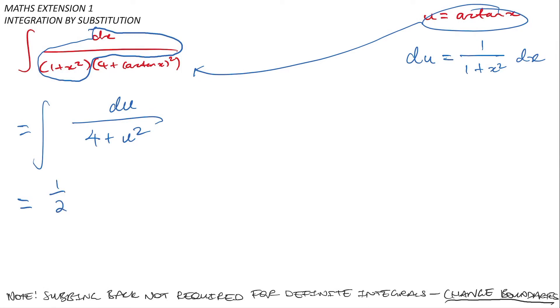In particular this will be half times the arc tan of u over 2 plus c.